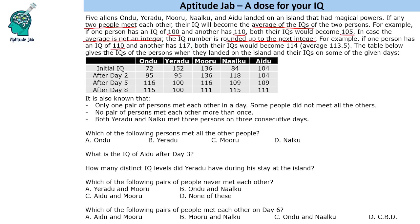For example, if 110 and 117 meet, their average would be 113.5, so it would become 114 for both of them. We are given a table with their initial IQ and IQs after day 2, day 5, and day 8.